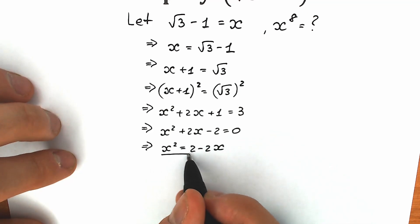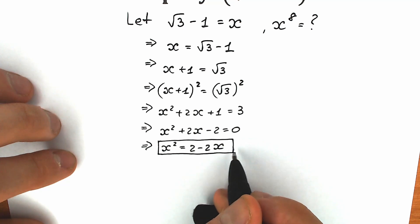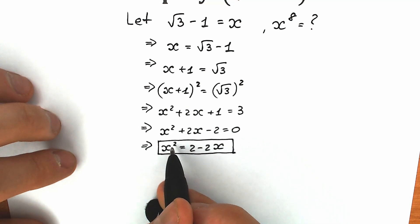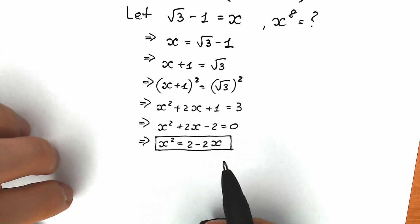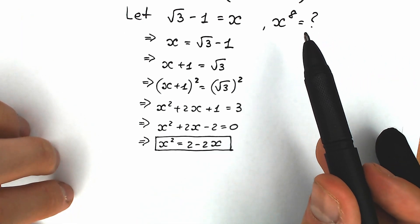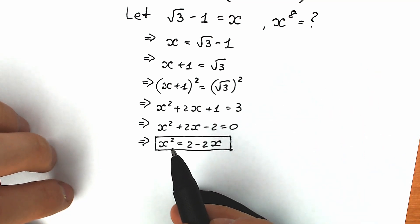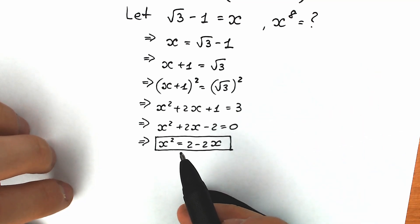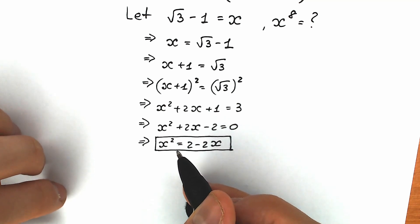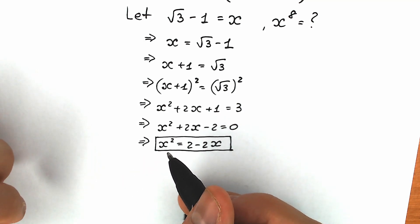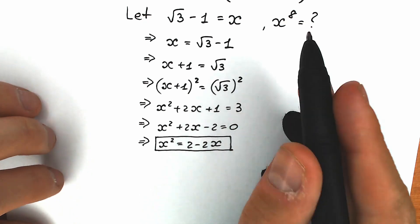This is an extremely important expression because we can easily express the second power in terms of the first power, reducing the exponent. We need to find x to the 8th power. Now that we know x squared, let's raise both sides to the second power to get x to the 4th, then once more to get x to the 8th. We're getting closer and closer.